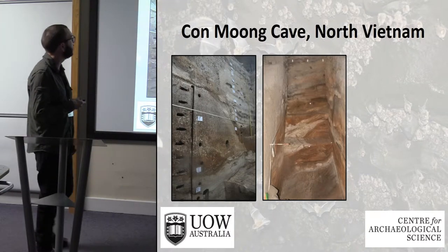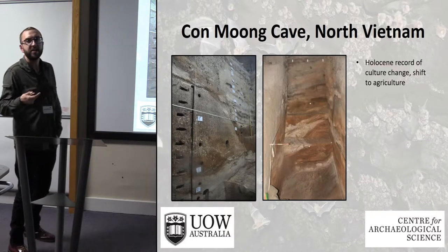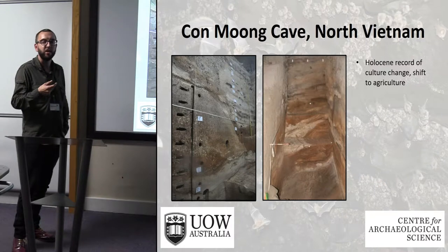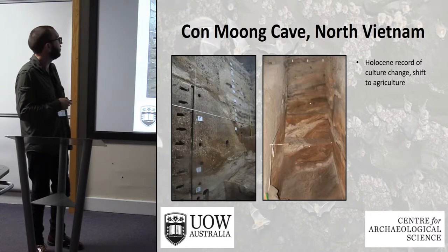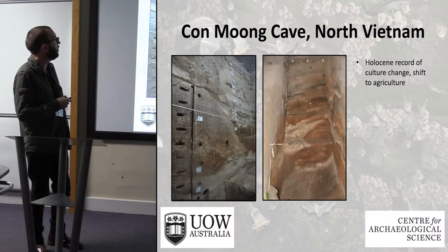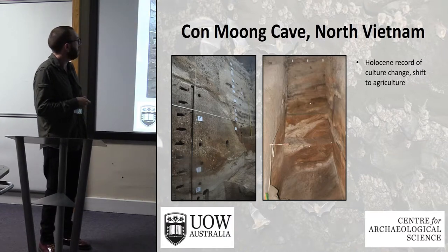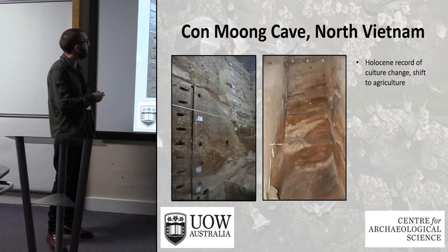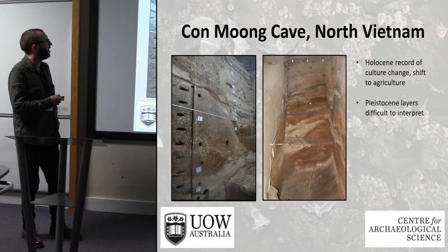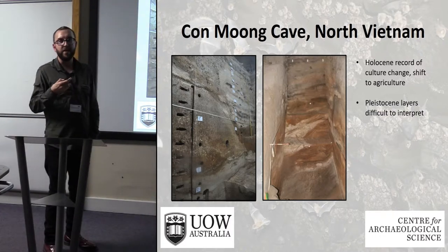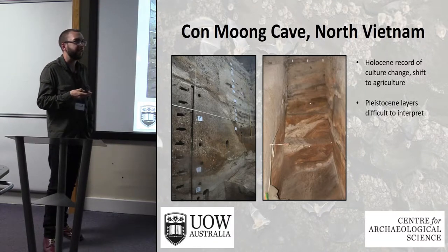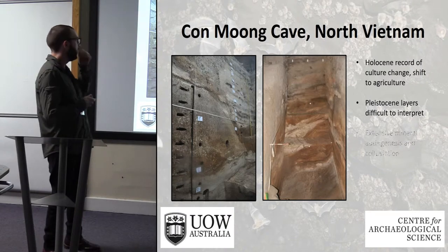This is Mon Cave in north Vietnam, one of the sites I'm working on for my PhD. Regionally it's quite an important site for terminal Pleistocene and Holocene hunter-gatherers and the transition to farming. Recent excavations have discovered earlier sediment going into the upper Pleistocene. You can see there's a lot of slumping, deformation, nodule formation, a huge erosive contact, and anthropogenic material throughout — really difficult layers to interpret.